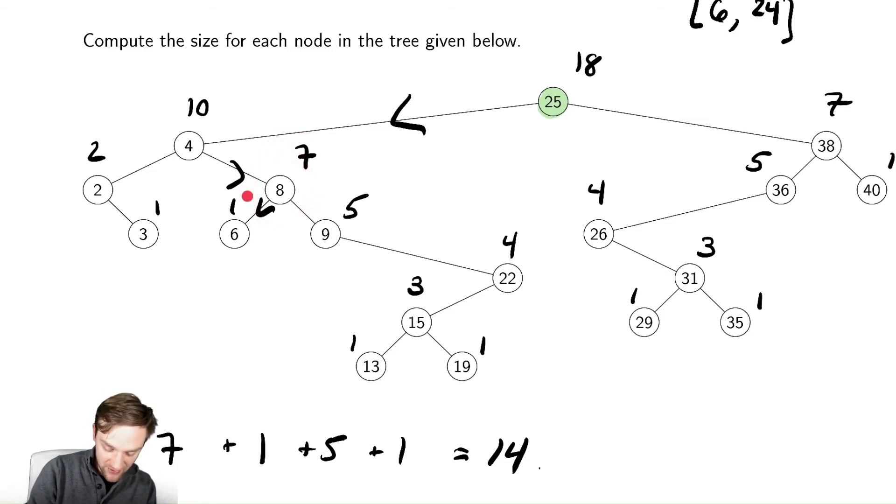Similarly, everything on the left subtree here is guaranteed to be less than or equal to 24, and therefore I just need to find out which ones are also greater than or equal to 6.